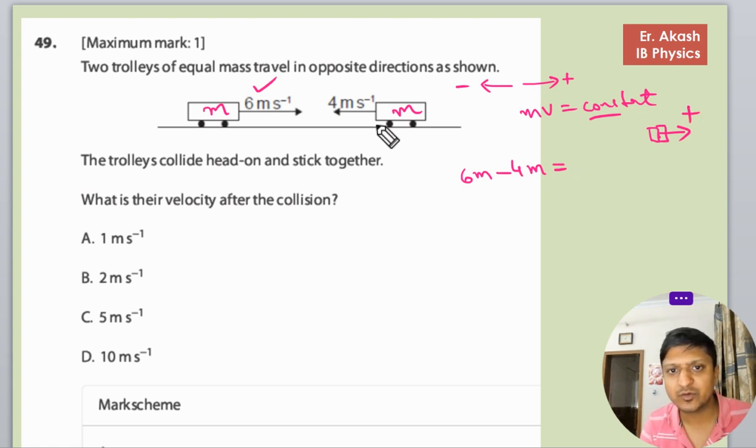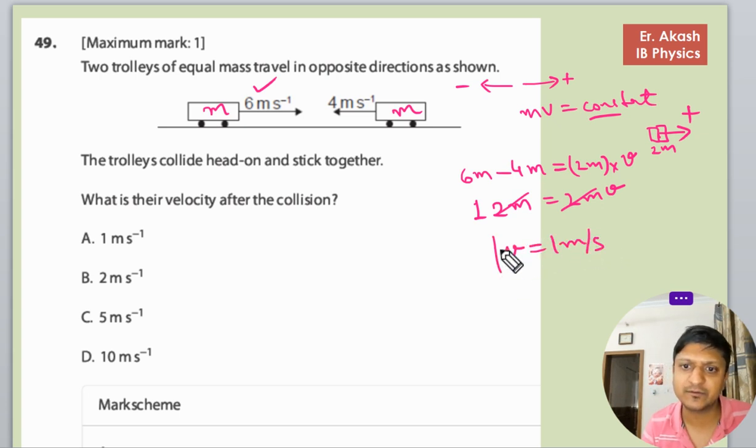So the total mass will be 2M. So 2M into velocity that we have to find. So this is 2M equals to 2MV. 2M goes off, so velocity is 1 meter per second.